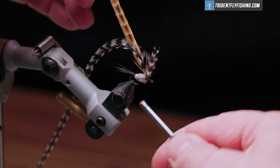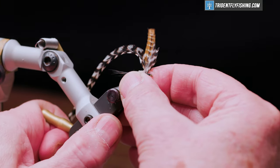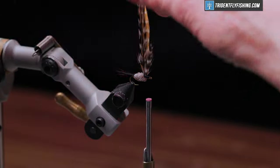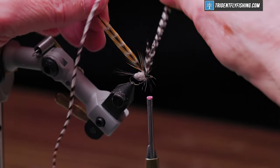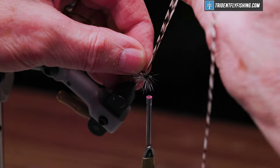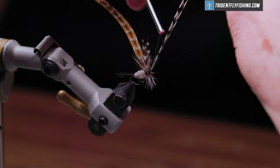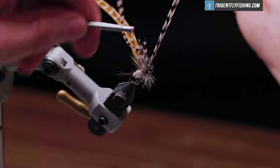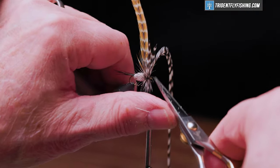Forward to the hook eye. We'll reposition our hook so the thread doesn't fall off the eye. And we'll start wrapping our hackle. We'll start with the grizzly - a couple of turns behind and jump in front of the wing. When we reach the eye, we'll capture it, cut off our excess.